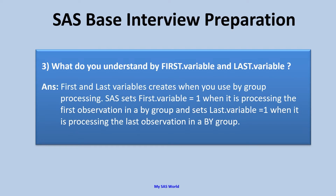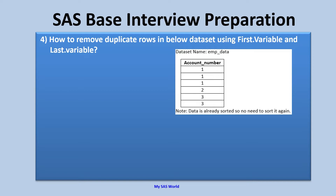Let's move on to the practical questions. How to remove duplicate rows in a data set using first dot variable and last dot variable? This is a very common question. Whenever an interviewer asks about the various ways of removing duplicates, you probably say we use nodupe and nodupe key, but this is another way of removing duplicates and the interviewer is more interested to know how you will remove duplicates using first dot variable and last dot variable concept. In the EMP data, we have one variable account number with values 111, 2, and 3 3. The values 111 and 3 3 are duplicates, but 2 is a unique value. This data is already sorted, so we are ready for by group processing.